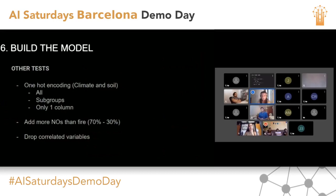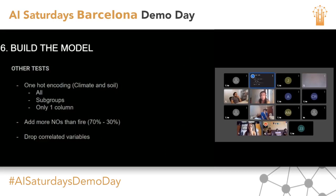We tried dropping correlated variables — like daily temperature and monthly temperature — but the model was worse, so we kept all of them. We looked at not just accuracy but also the F1 score, which accounts for precision and recall. This is important because with imbalanced data, a model predicting mostly 'no fire' can get high accuracy just by chance, but the F1 score will drop significantly. We ended up testing four classifiers: AdaBoost, Random Forest, XGBoost, and CatBoost, with different numbers of trees and learning rates.